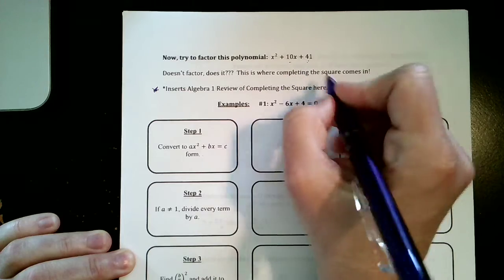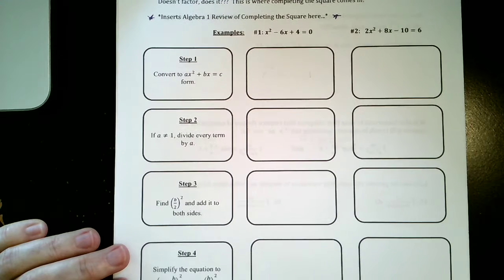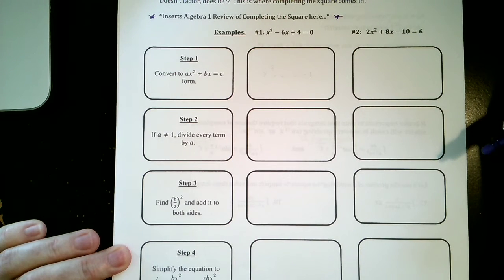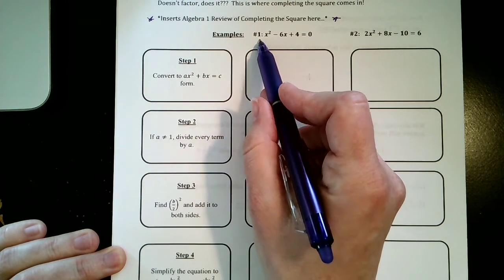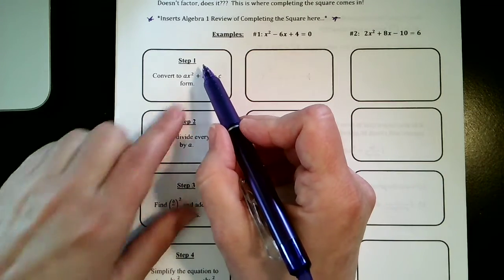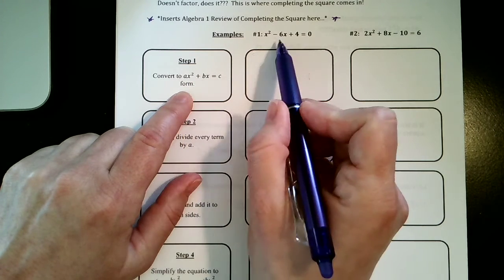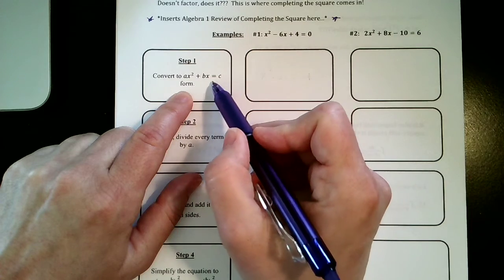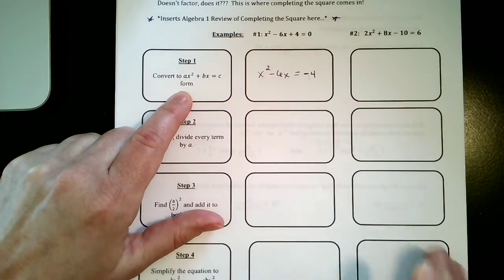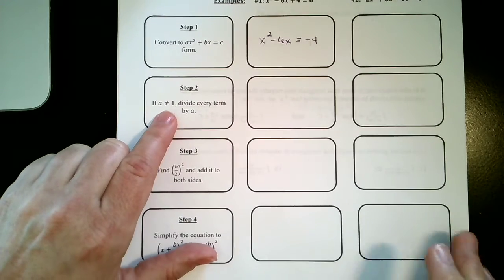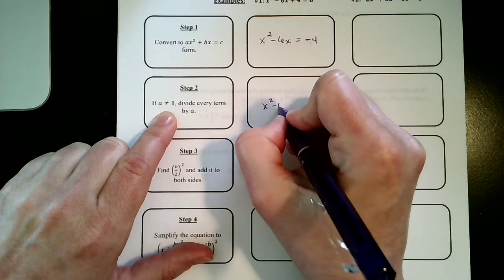Here's algebra 1 review of completing the square. I actually grabbed this right from my algebra 1 notes and plopped it right into this. Step one is to convert ax² + bx = c, so we have to convert it to this form—I can't have the constant here, I've got to move the c value over to the other side. So that's going to give me x² - 6x = -4. If a is not equal to 1, we have to divide every term by a. Well in this case a is equal to 1.